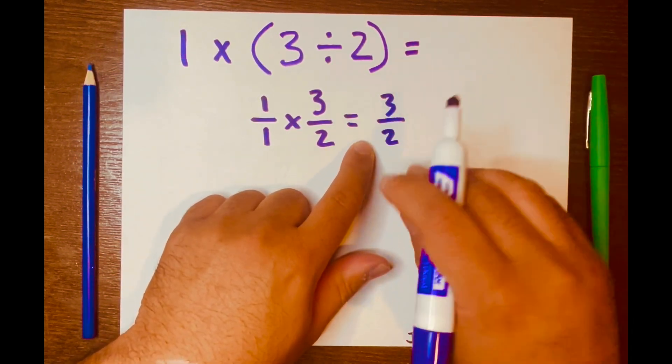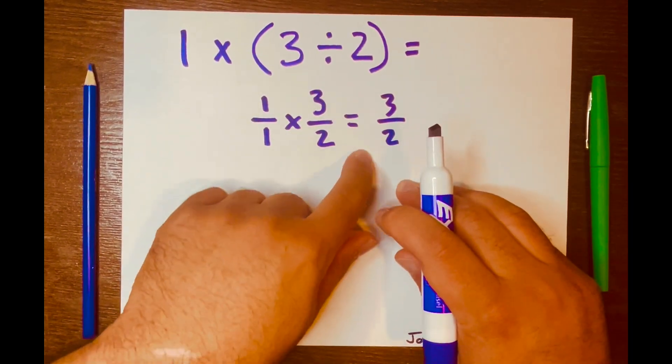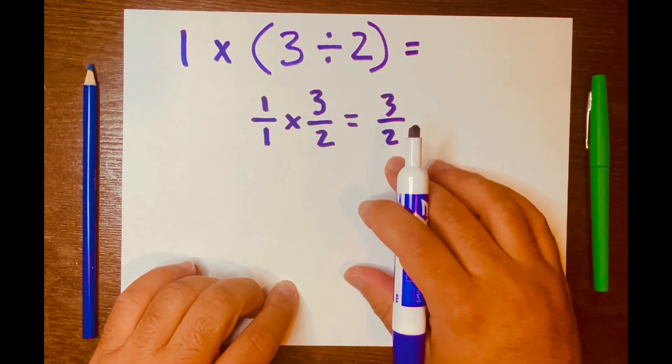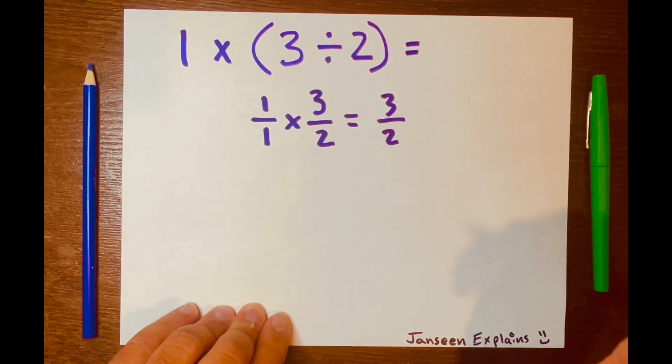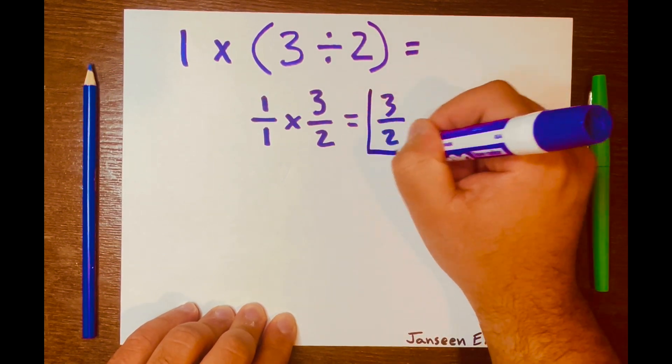This is an improper fraction. Now let's get a mixed number and a decimal answer as well. Let's start with the mixed number. We'll use long division here.